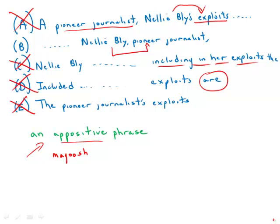Meanwhile, B has no grammatical mistakes. It's completely direct, and it works perfectly. The exploits of Nellie Bly, pioneer journalist, included circling the globe faster than Jules Verne's fictional Phileas Fogg. So answer choice B, by far, is the strongest answer.